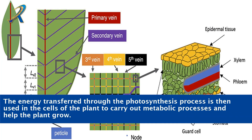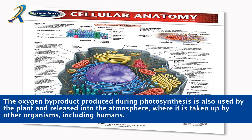The energy transferred through the photosynthesis process is then used in the cells of the plant to carry out metabolic processes and help the plant grow. The oxygen byproduct produced during photosynthesis is also used by the plant and released into the atmosphere, where it is taken up by other organisms, including humans.